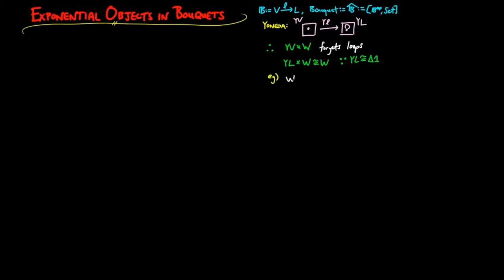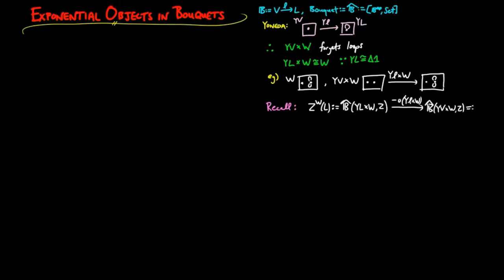For example, if W is the bouquet with two flowers, one with no petals and the other with two petals, the product of morphisms YL and the identity on W is the inclusion of vertices. Recall that precomposition by this morphism is the right action by L in the exponential object when W is in the exponent.